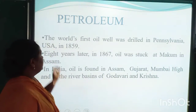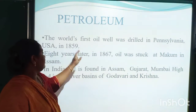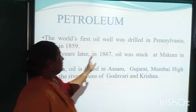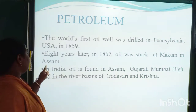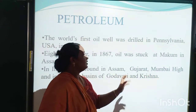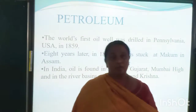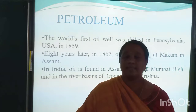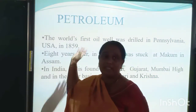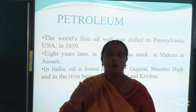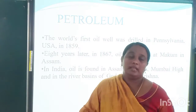The first oil was drilled in Pennsylvania, USA in 1859. Eight years later, in 1867, oil was found in Assam, India. In India, oil is found in Assam, Gujarat, and in the river basins of Godavari and Krishna. India started refining oil from Assam after eight years of the first oil discovery in 1859.